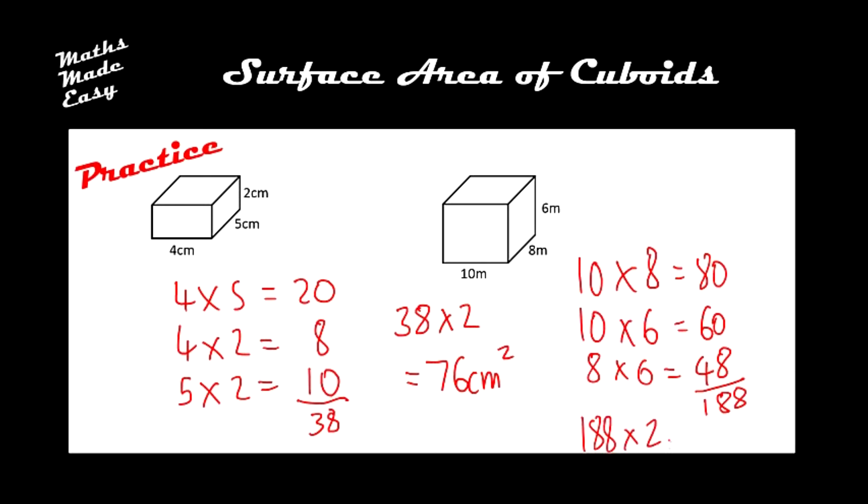And then if we take 188, because that's only half of the faces, double that, we get 376, and it's metres squared. Be careful, because these were all measured in metres, not centimetres.